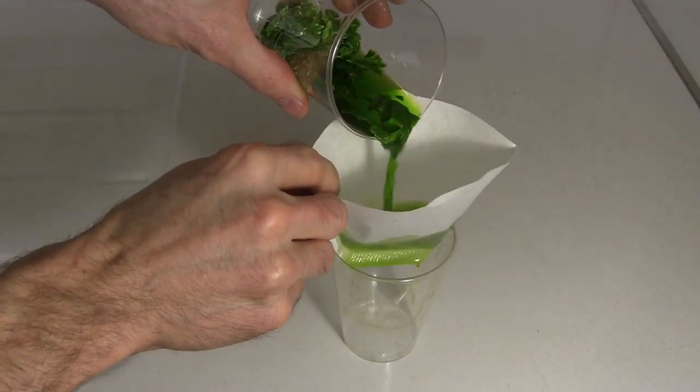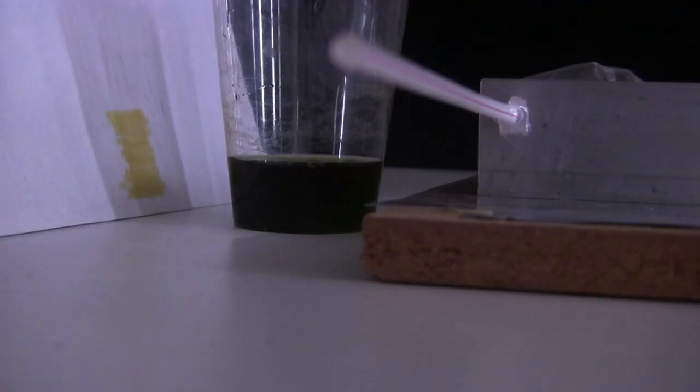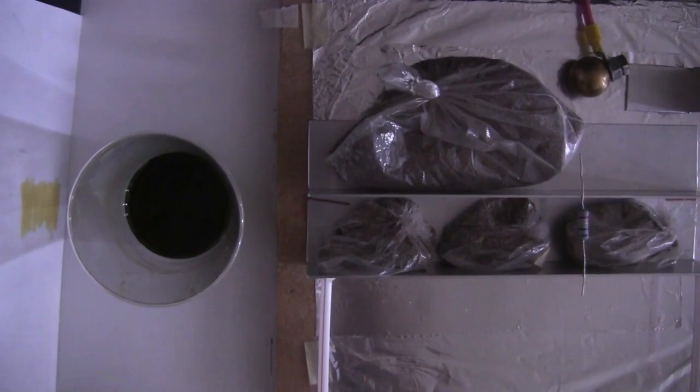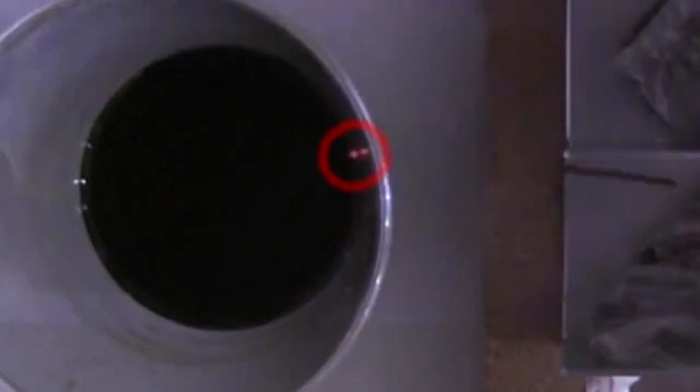I then poured that through a coffee filter into a second cup. But when I tried it, it looked like it didn't work. At least that's what I thought. Until I looked at it from the top. Then I saw this red spot. It was working, but there was probably so much chlorophyll that all the light got absorbed at the very edge.